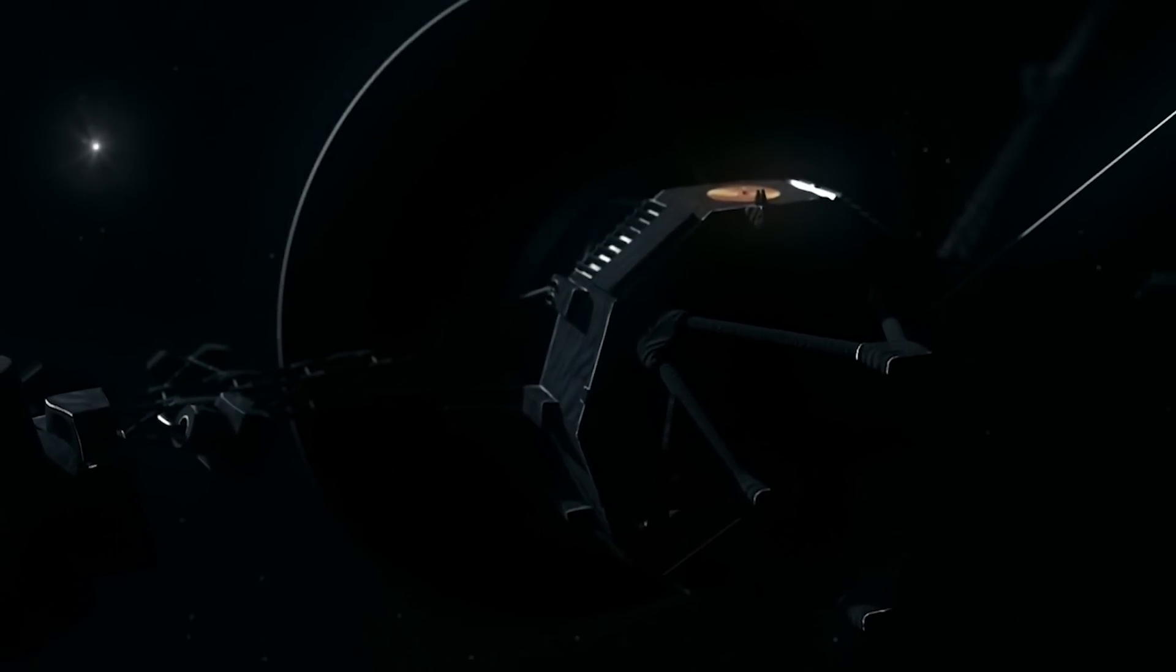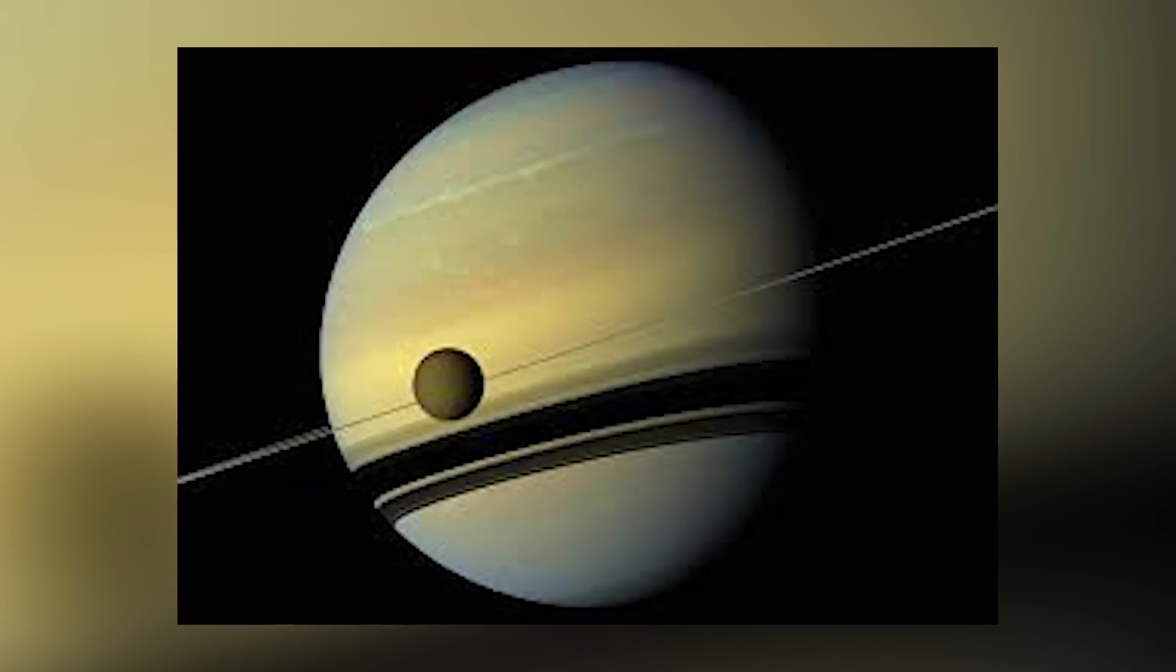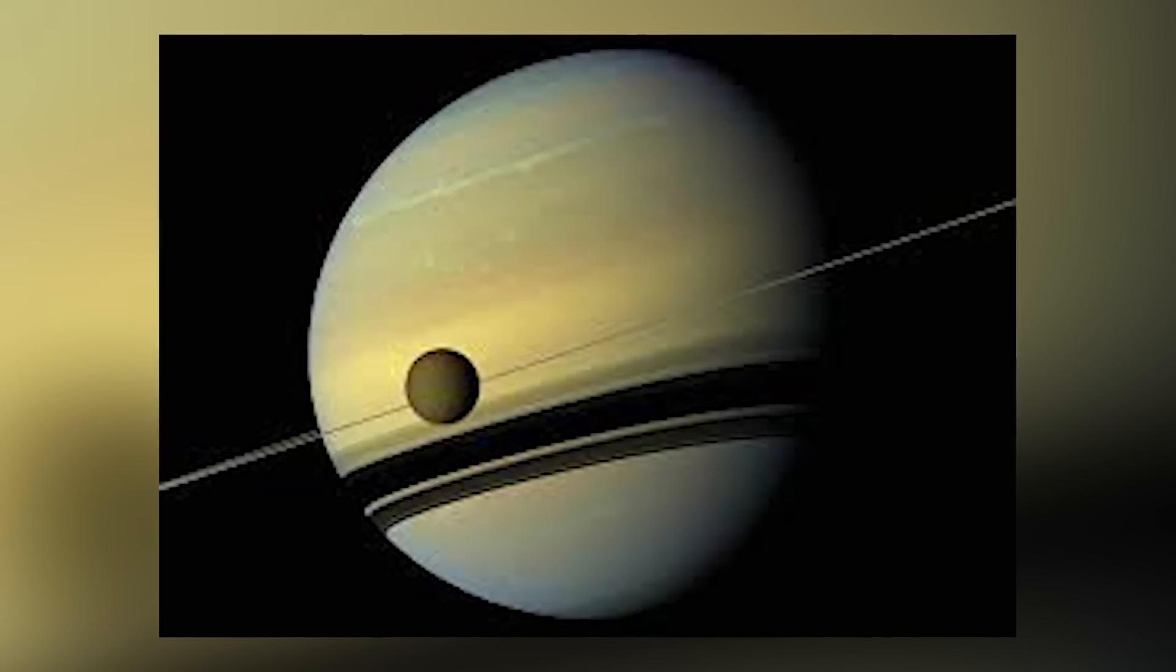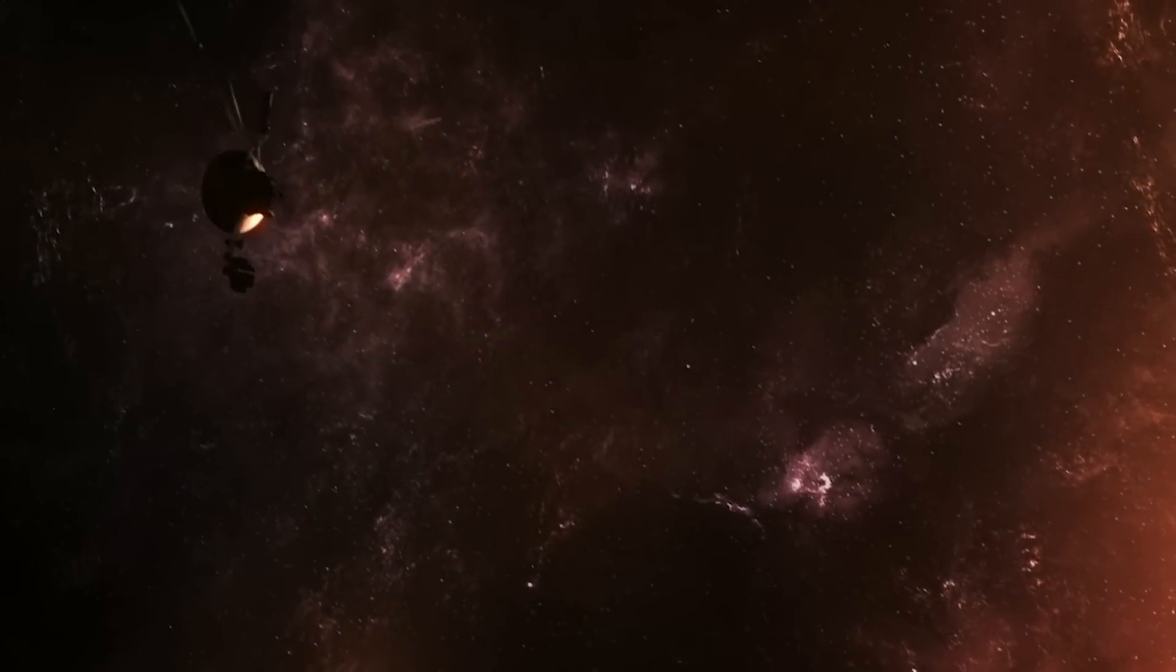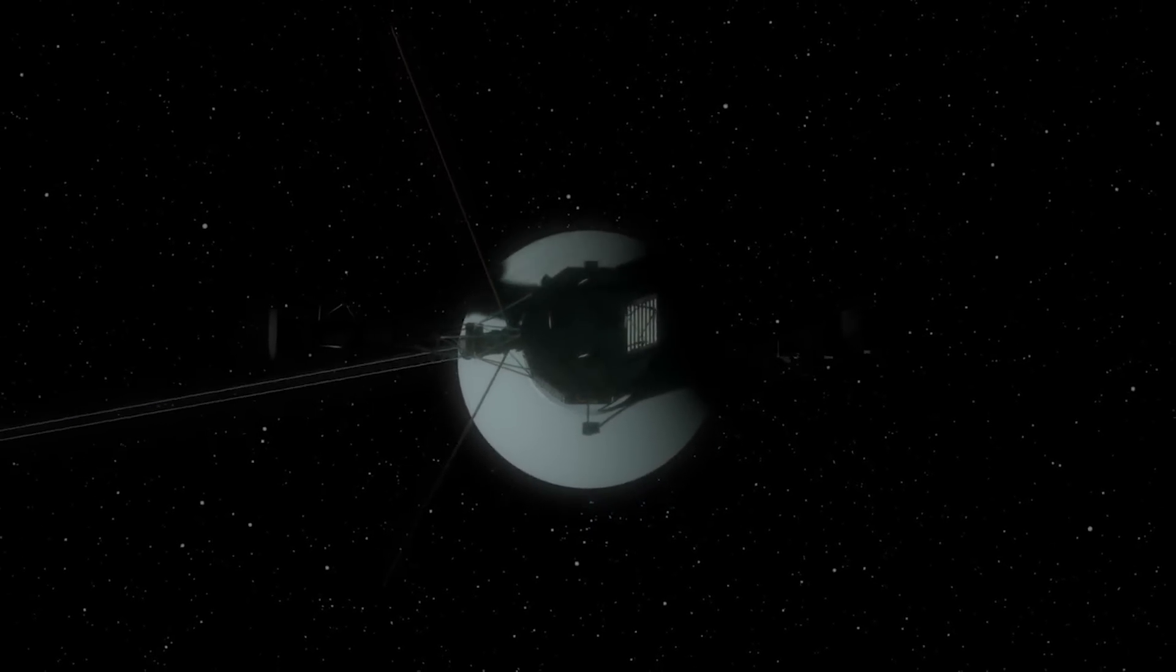Meanwhile, Voyager 1 got up close with Titan, Saturn's enigmatic moon, revealing its thick, hazy atmosphere. After that, the Voyager spacecraft set their sights on a bold new mission to probe the farthest reaches of space.